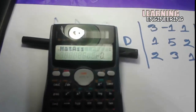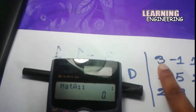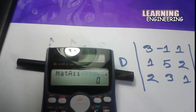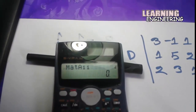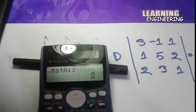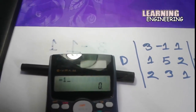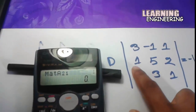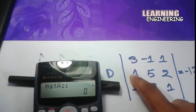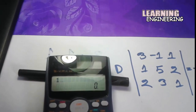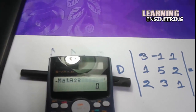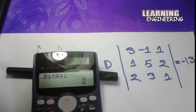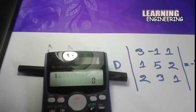Here you put in the matrix numbers. Column one, row one is three. Row one, column two is minus one. I will start entering: three, equal, minus one, equal, one, equal. Then row two: one, equal, five, equal, two, equal. Then row three: two, equal, three, equal, one, equal.